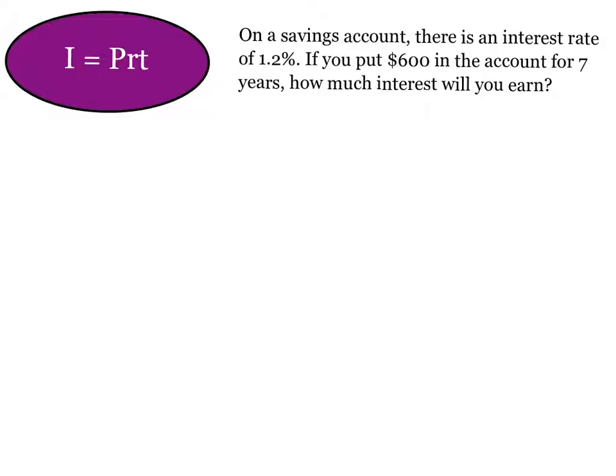On our first example problem, we have our formula for interest. I equals P times R times T. And we're going to apply that to our story problem. So we have a savings account. There is an interest rate of 1.2%. If we put in $600 for seven years, how much interest will we earn? What I like to do is I like to write out all my variables. So I can say I equals PRT. How much interest will we earn? That's what it's asking us. So our interest, our I, is our unknown.